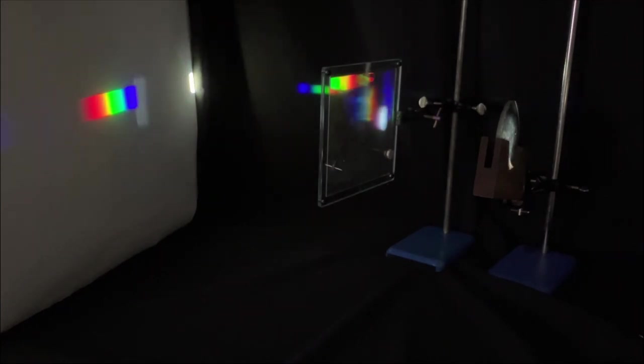If we make the slit slightly wider, then we can blur in the two parts of the spectrum and produce a nicer spectrum on the screen.